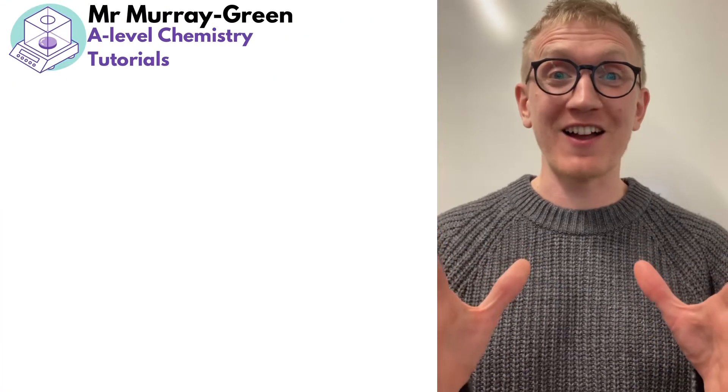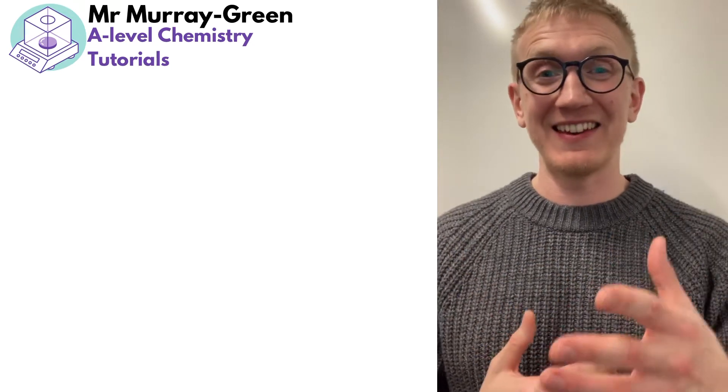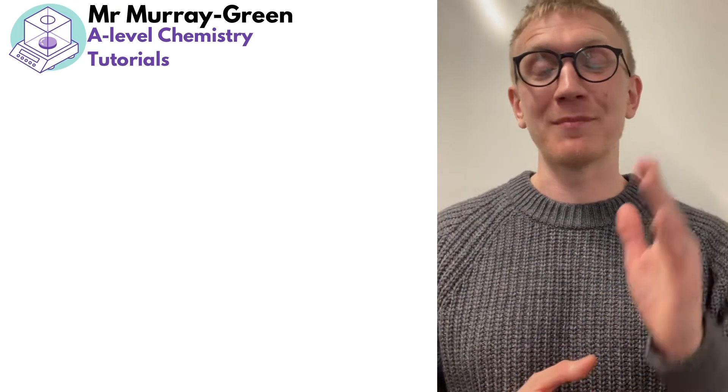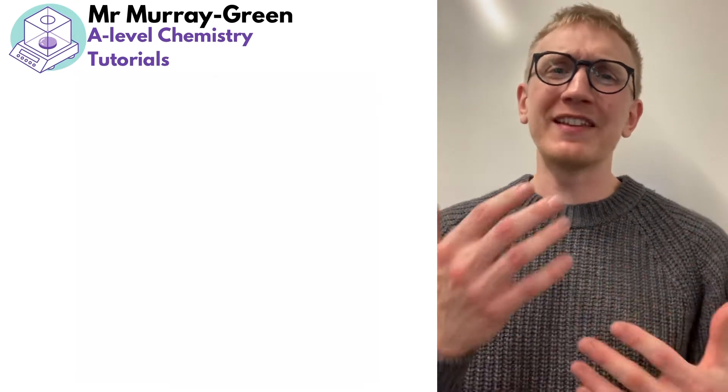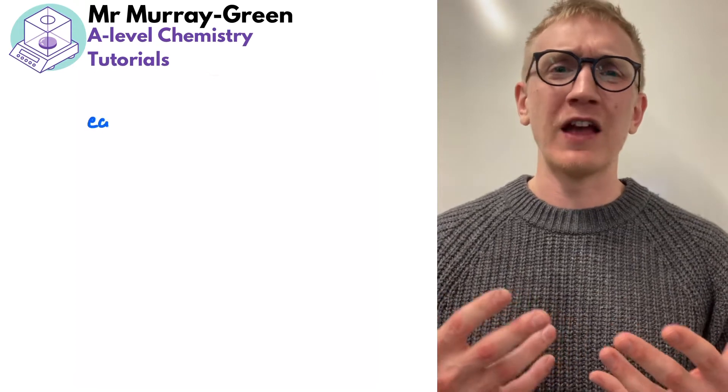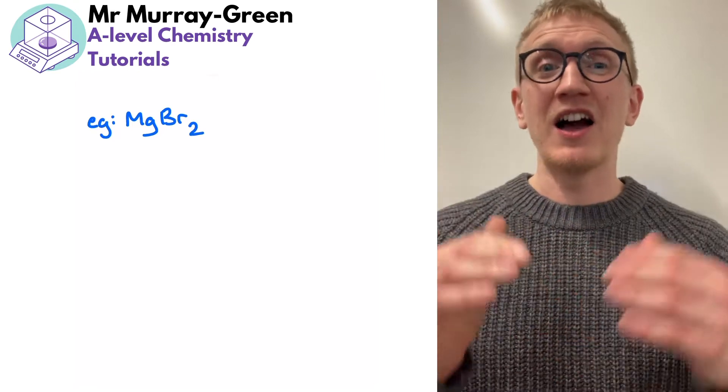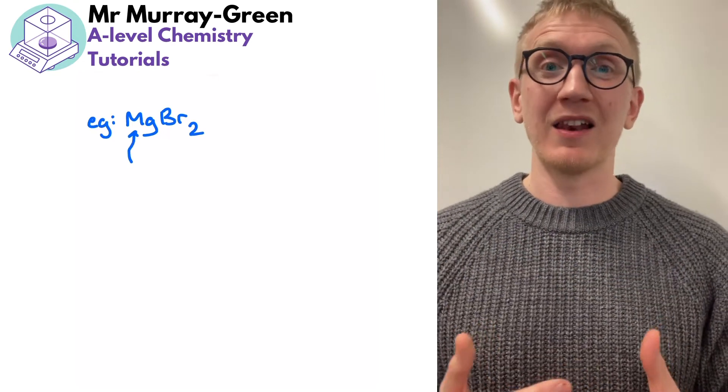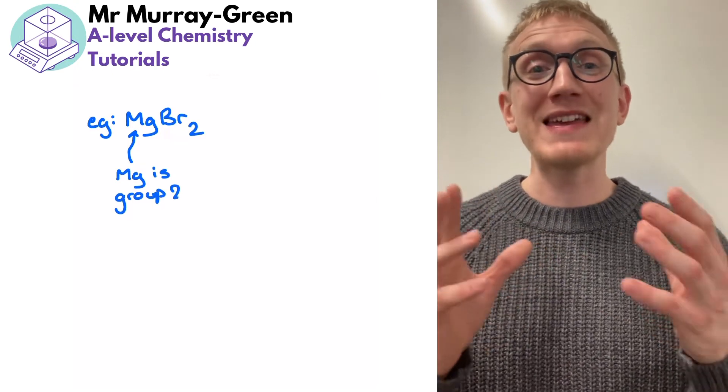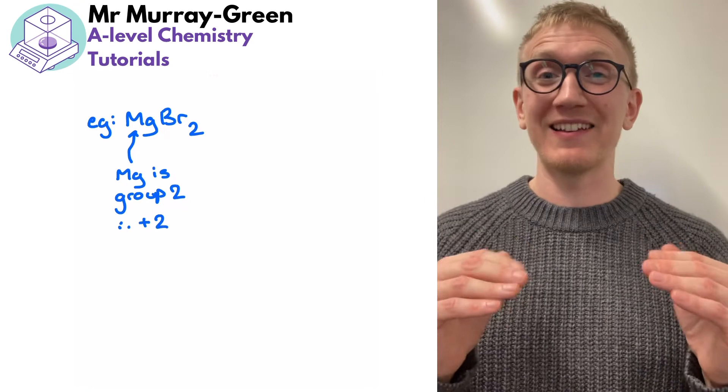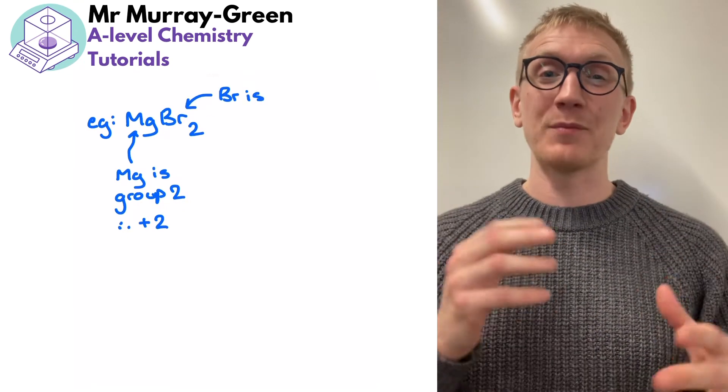So when it comes to the dot and cross diagrams we want a set procedure that we can follow to make sure we have almost like a checklist in the exam of steps we can take to make sure that we don't get caught out by any of the more complicated examples at A-level. The reason we might need this at A-level is because those straightforward GCSE scenarios of NaCl and KBr are going to be met by other examples like Na2O and even calcium nitride which is going to be Ca3N2. So we need a set of procedures in place that can help us out in the exam.